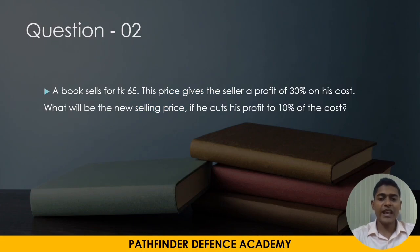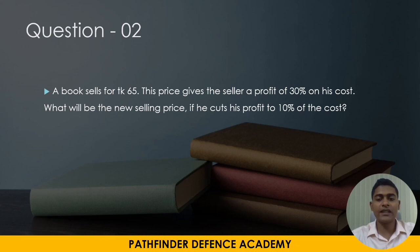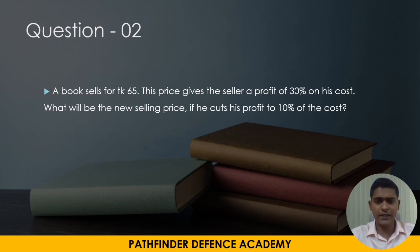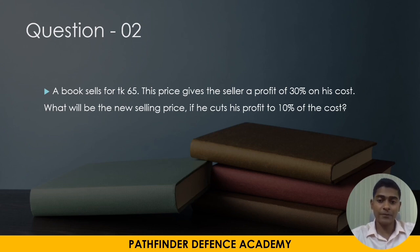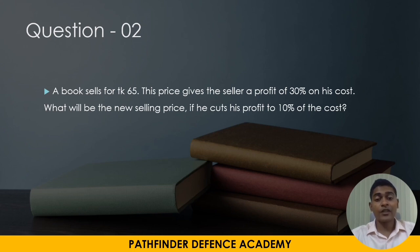The question is: A price gives the seller a profit of 30% on his cost. What will be the new selling price if he cuts his profit to 10% of the cost? That means, what will be the new selling price if he cuts his profit to 10%?